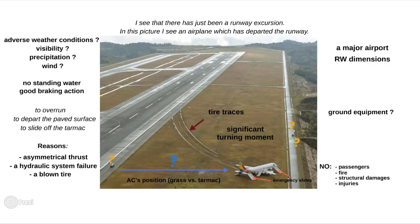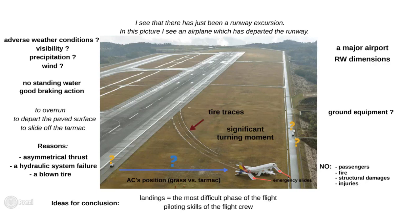In the end, make a general conclusion. For instance, talk about landings as the most difficult and demanding phase of the flight, or about the piloting skills of particularly this flight crew — whether they did a good or a bad job — and probably what you would do in this situation. This is the moment where you can link your story with literally any broader aviation-related topic. Remember that in most cases, this will define the next part of your exam interview, because the examiner will likely pose some extra questions about the topic that you are bringing up.